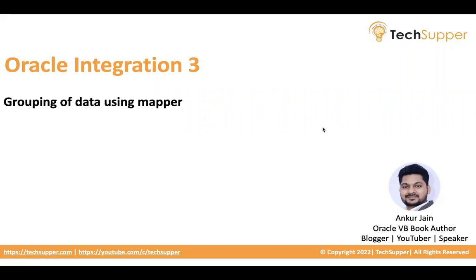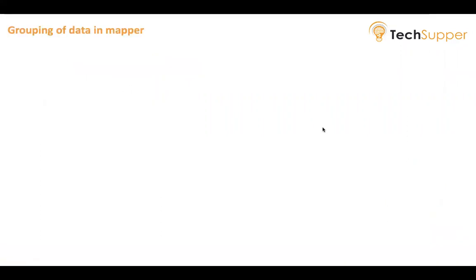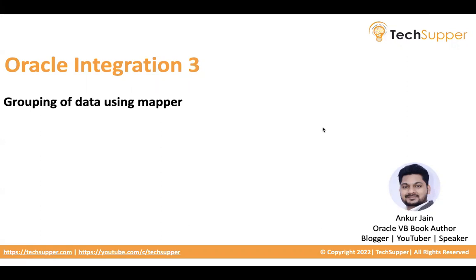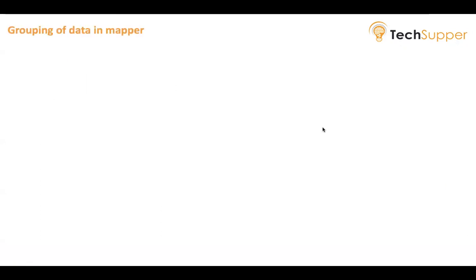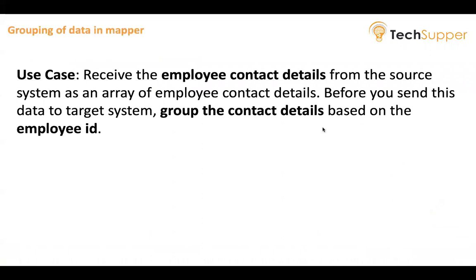Welcome to this video. I'm going to show you how to group data with the help of Visual Mapper. Before we get into the solution, let us understand the use case. We need to group data from the source system where we are receiving employee contact details as an array. Each employee may have multiple contact details, so we get a repeated employee ID with its contact details. We want to group those contact details based on the employee ID.